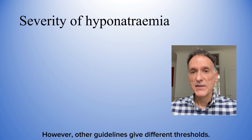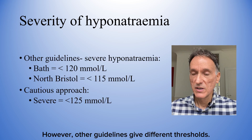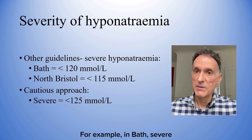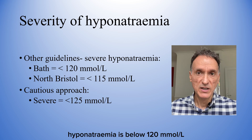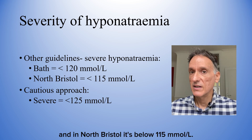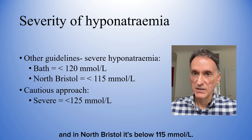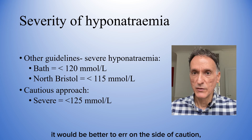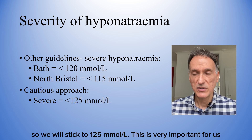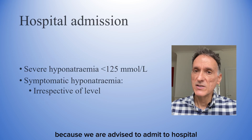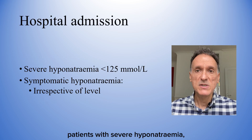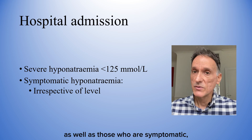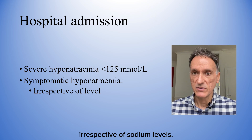However, other guidelines give different thresholds. For example, in Bath, severe hyponatremia is below 120, and in North Bristol it's below 115. But from a primary care perspective, it would be better to err on the side of caution, so we will stick to 125. This is very important because we are advised to admit hospital patients with severe hyponatremia, as well as those who are symptomatic, irrespective of sodium levels.